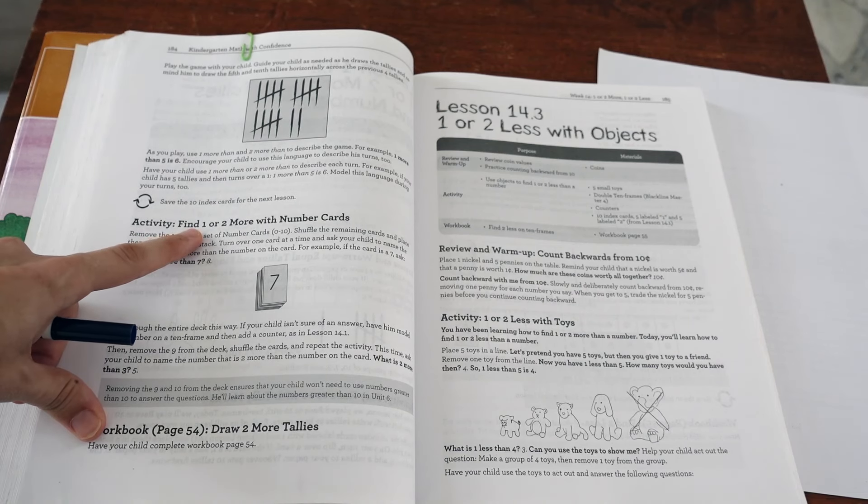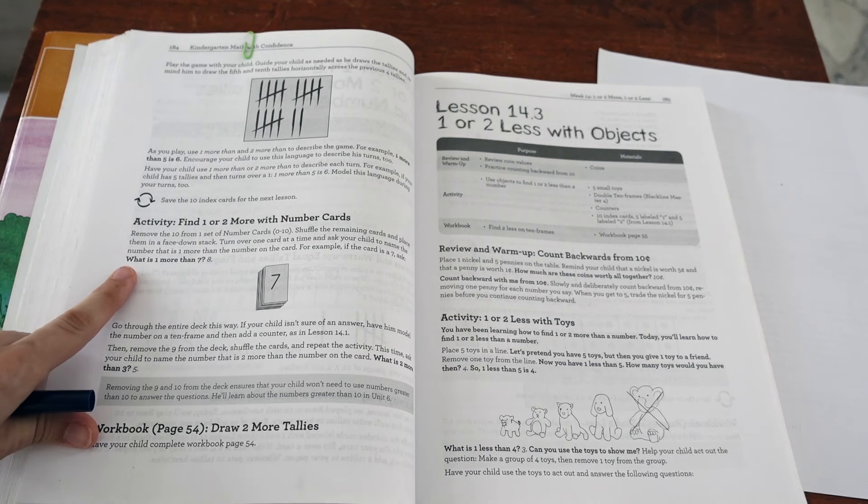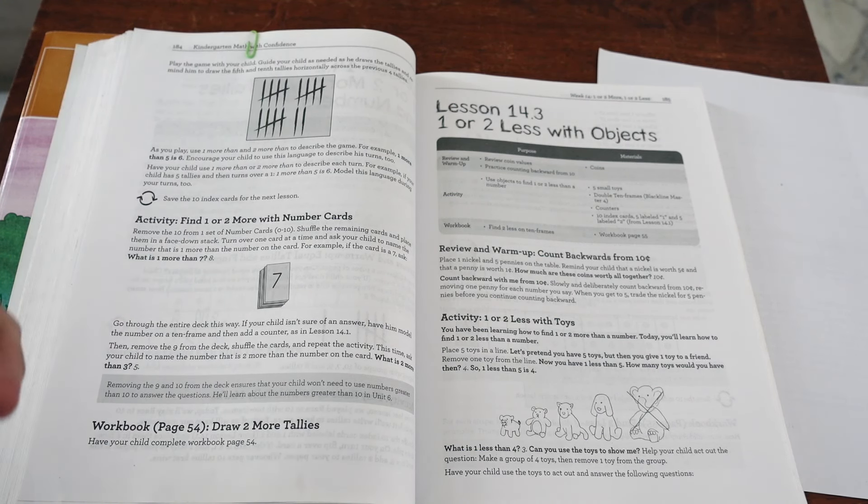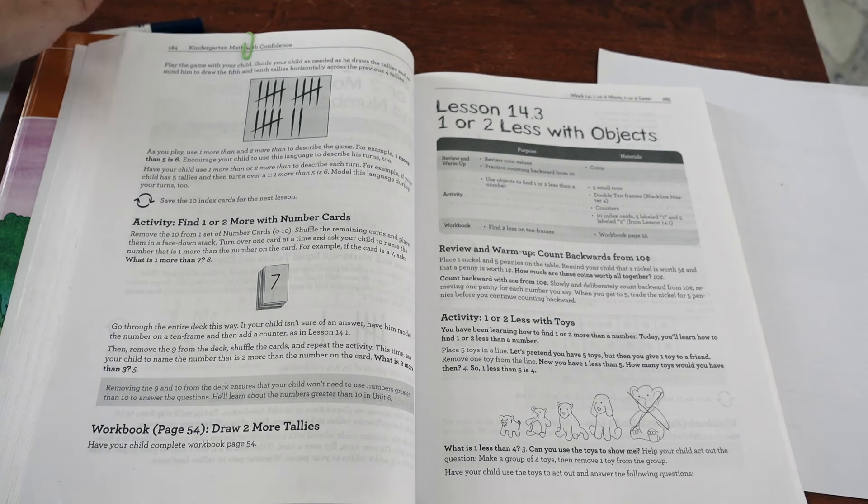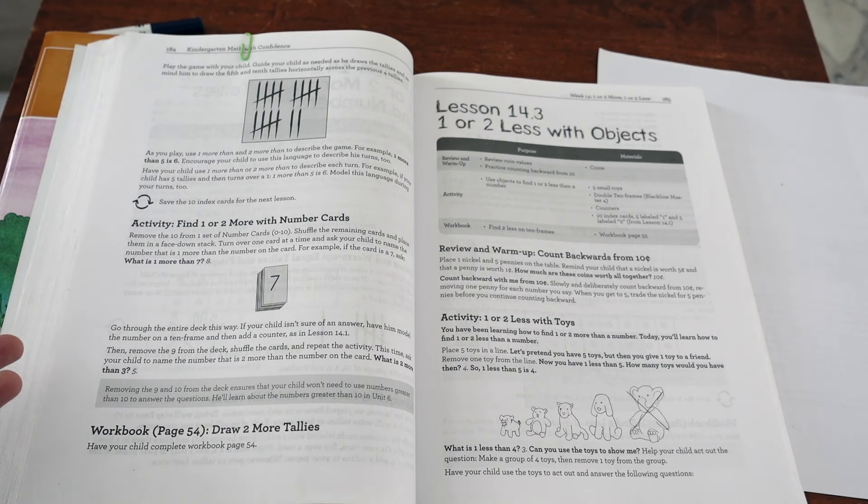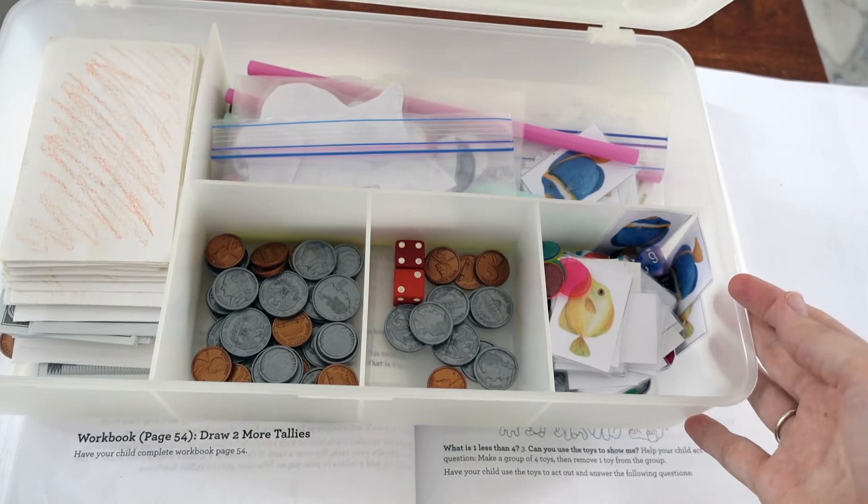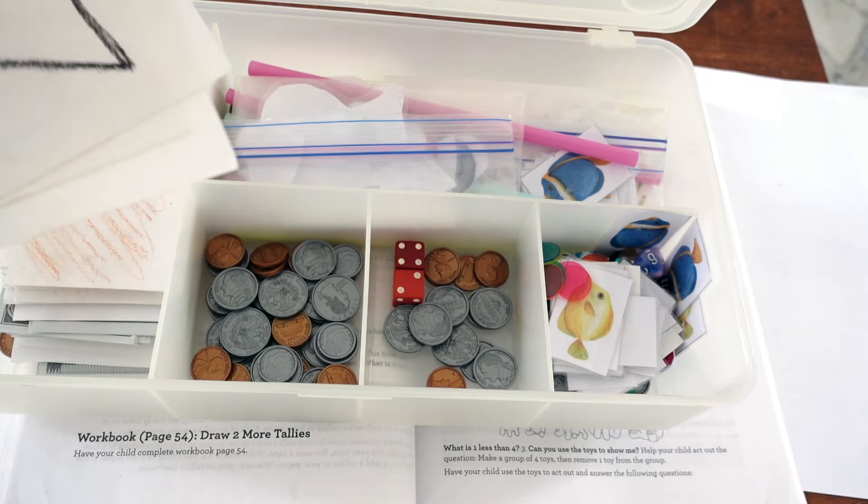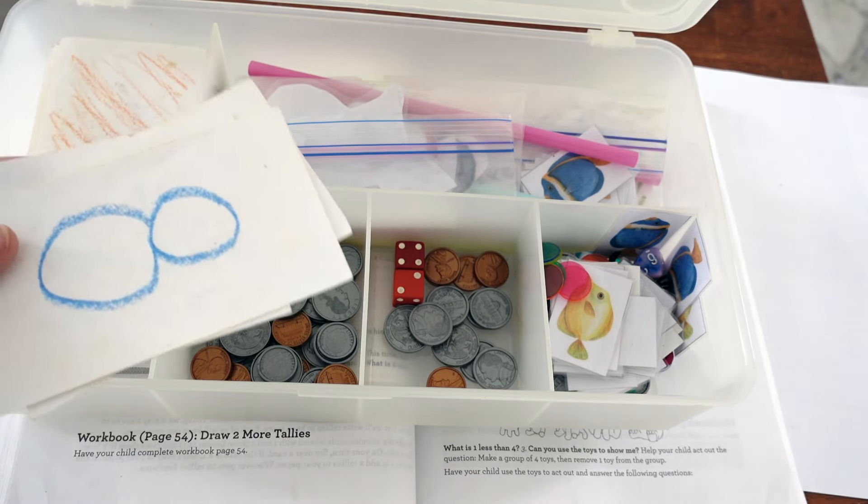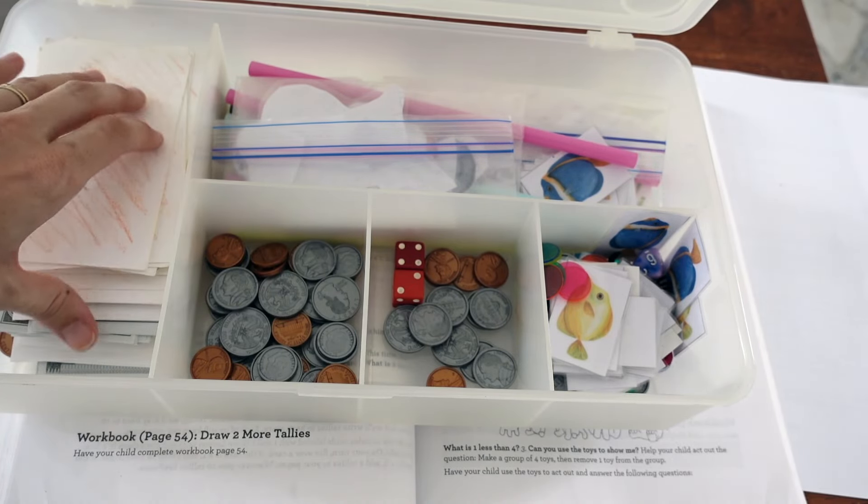Then the next activity will be finding one or two more with number cards. I need my number cards numbered one through 10. And we're just going to go through them. I'm going to ask what is one more than seven and go through all the different numbers. I can tell by looking at this, granted, I have already used kindergarten math with confidence once and it's fairly consistent. So it's pretty easy for me to know what the deal is here as I look at this lesson. So as far as my math box, I just have this handy dandy little box here. And here are my number cards, flash cards that we made the first time we went through kindergarten math with confidence that we are still using. I have a couple of different sets. So they're in different colors. All the blue ones go to one set. I'll just quick pull those out.